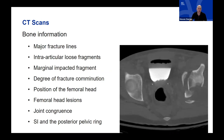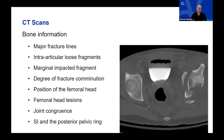CT scans also provide a wealth of bony injury information. You can see the major fracture lines, intra-articular loose fragments, impacted fragments, comminution, where the femoral head is sitting, whether the head is dislocated, any associated lesion on the femoral head relevant to prognosis, whether the joint is congruent, and the structures of the remainder of the pelvic ring including the SI joints and the posterior pelvis.